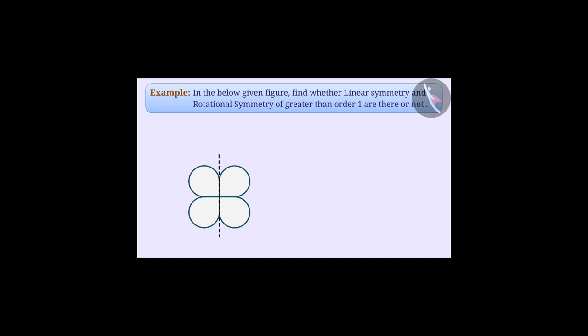When the two sides of the shape are coincident when the shape is folded along a line, that is, one half of the shape is a mirror image of the other half, then we can say that the figure has linear symmetry.